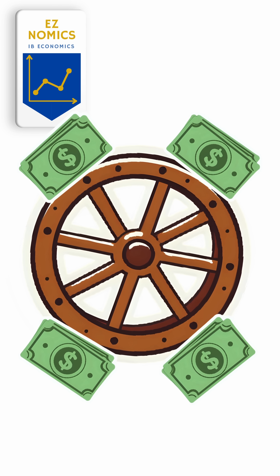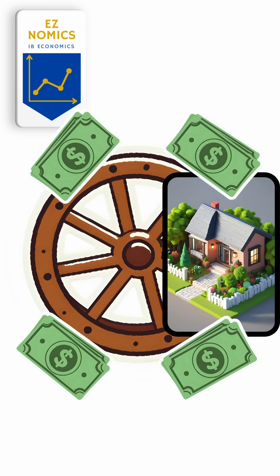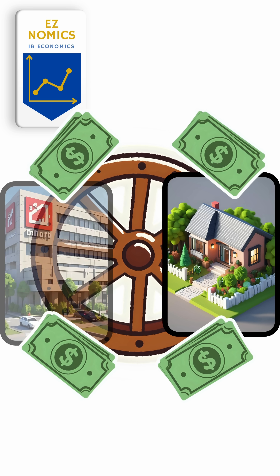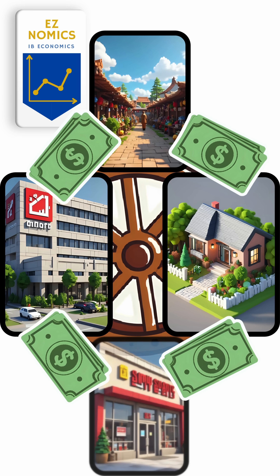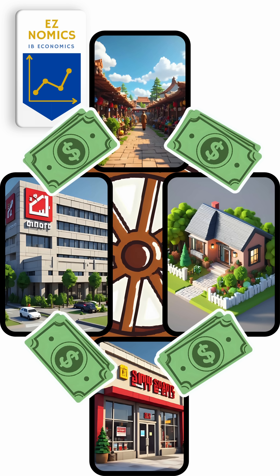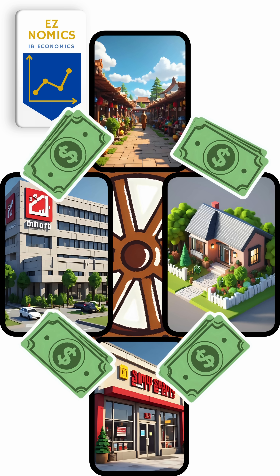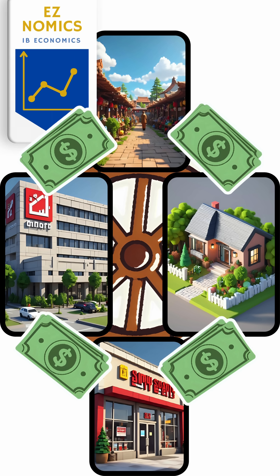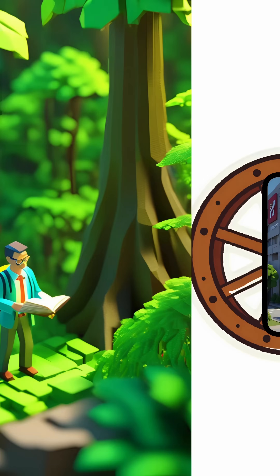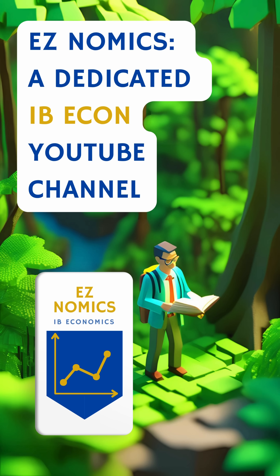So households provide land, labor, capital, and entrepreneurial spark. They get paid for it, then they spend it. Round and round it goes. That's the circular flow of income — continuous, smooth, at times bumpy, and powered by the four factors.